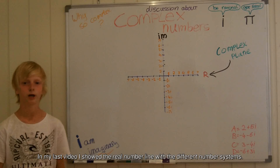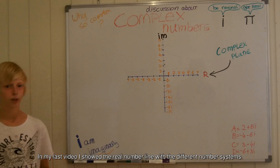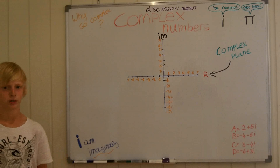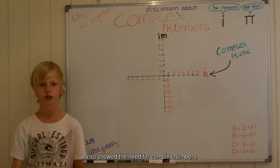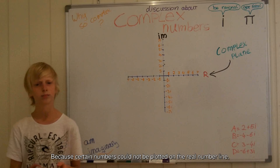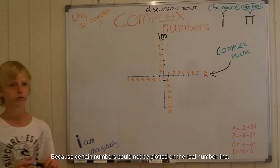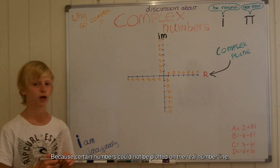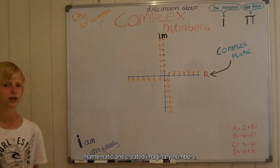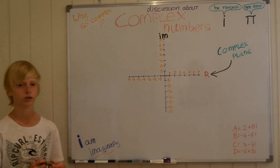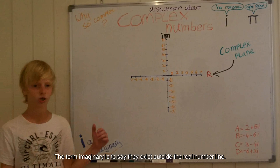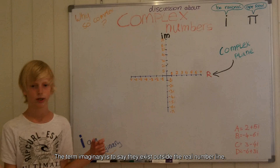In my last video, I showed the real number line with the different number systems. I also showed the need for complex numbers. Because certain numbers could not be plotted on the real number line, mathematicians created imaginary numbers. The term imaginary is to say they exist outside the real number line.